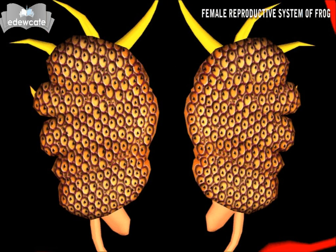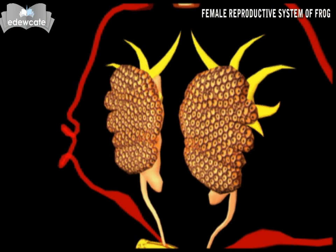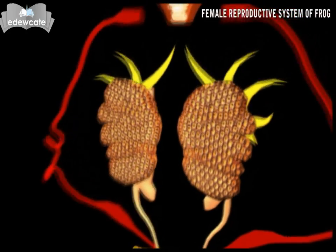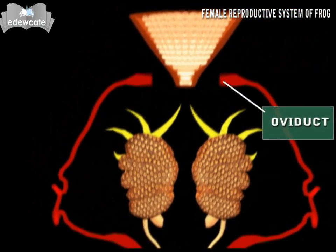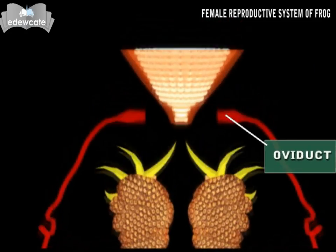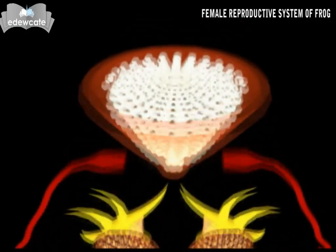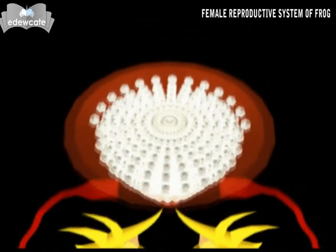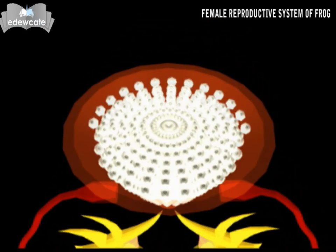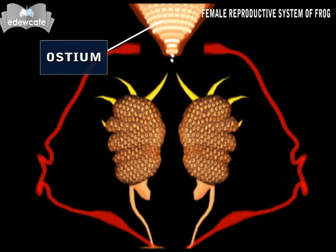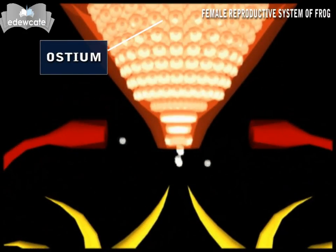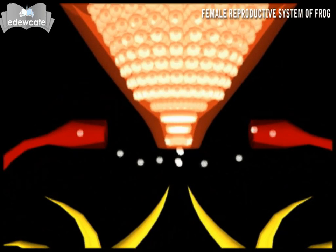Mature ova are discharged into the body cavity. A pair of long, convoluted or folded, tube-like structures called oviducts are present, one on either side of the ovaries. Each oviduct anteriorly opens into the body cavity through a ciliated funnel called ostium. The funnels collect the ova from the body cavity.